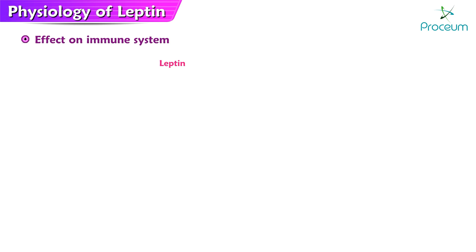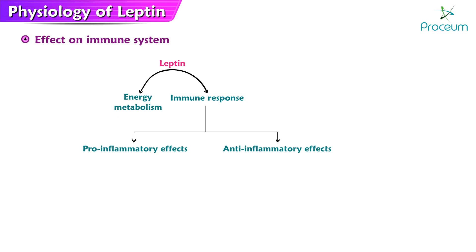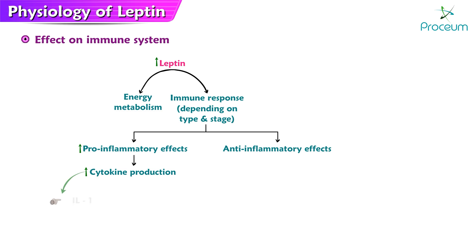Effect of leptin on the immune system. Leptin has been shown to play a role in the regulation of the immune system and has been described as a link between energy metabolism and the immune response. This hormone has both pro-inflammatory and anti-inflammatory effects on the immune system depending on the type and stage of the immune response. In general, high levels of leptin have a pro-inflammatory effect, enhancing the production of cytokines such as interleukin-1 and tumor necrosis factor alpha, which play a key role in the initiation and progression of the immune response.